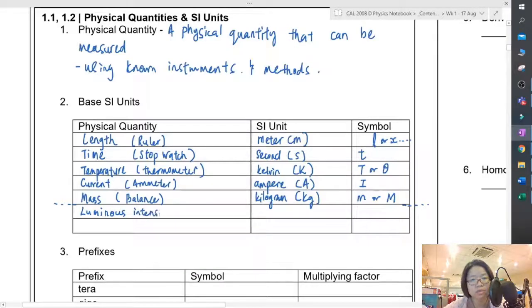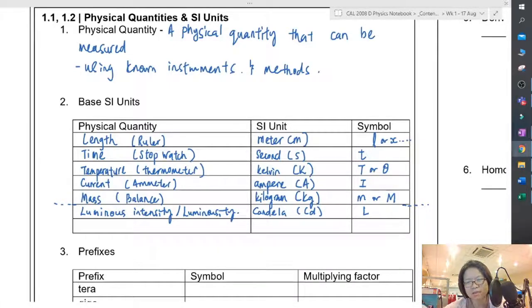The other two that are less popular would be luminous intensity, or some textbooks will call it luminosity. SI unit here is candela (cd); sometimes we use L, sometimes we use IV. This is very subjective.